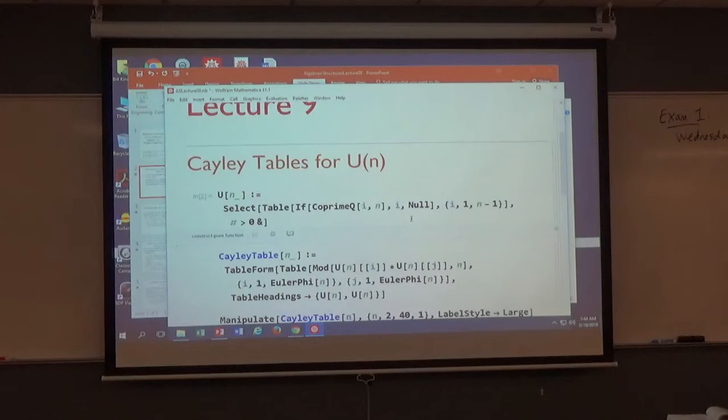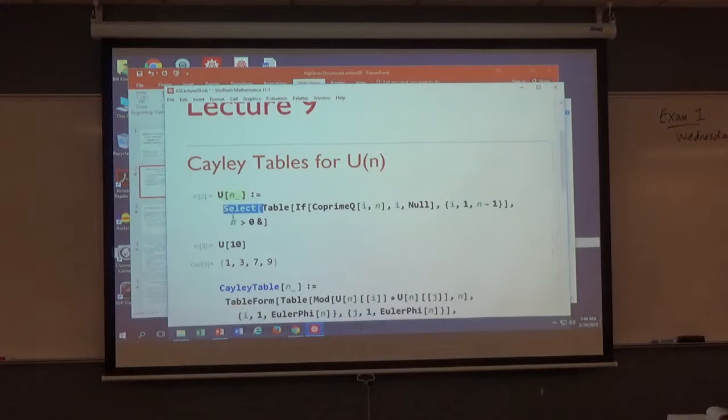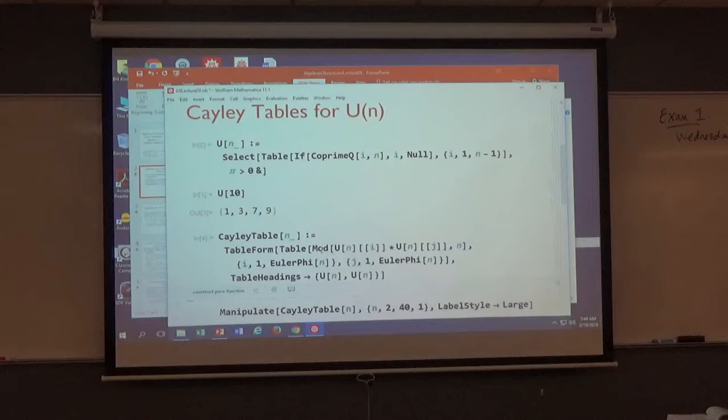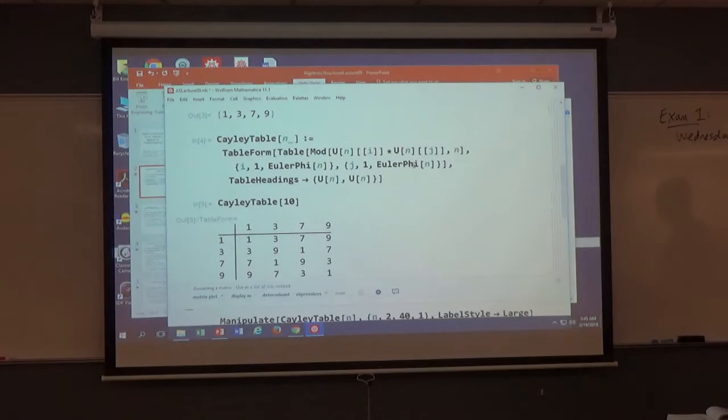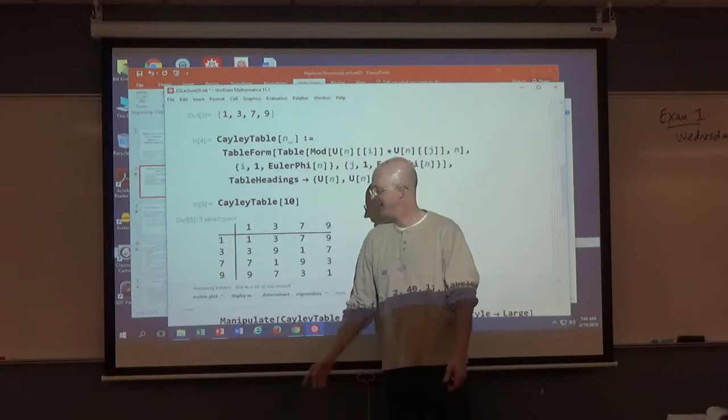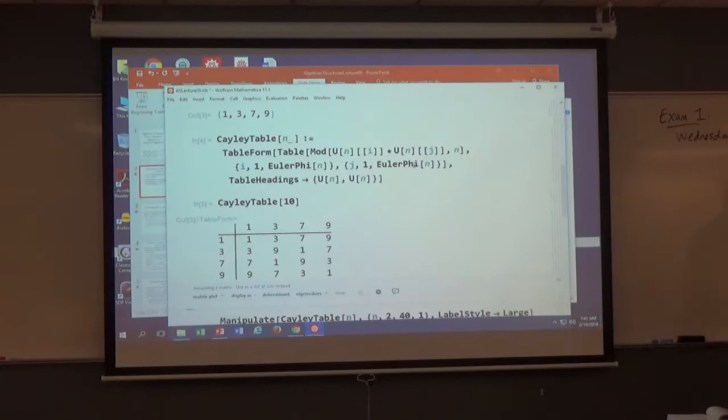And this is a code that creates the actual Cayley table itself once you have the elements of U(n). Let me go ahead and illustrate this on Mathematica now. So again this will create the elements of U(n), for example, U10. This thing creates a Cayley table. I can create a Cayley table then for U10. There we have it. And you can double check if this was right. We're doing multiplication mod 10. So for example, 3 times 7 is 21, mod 10 is 1. 3 times 9 is 27, mod 10 is 7.